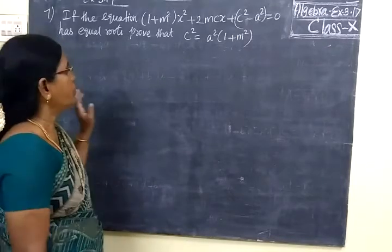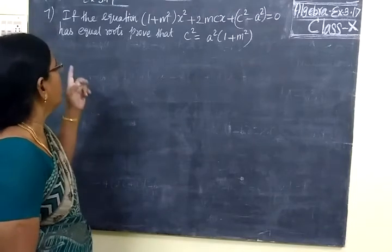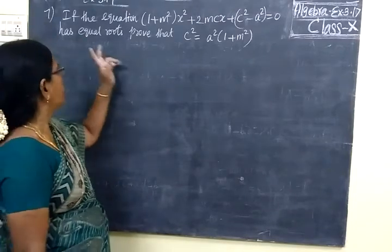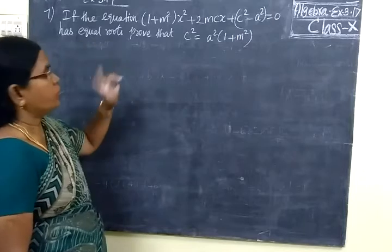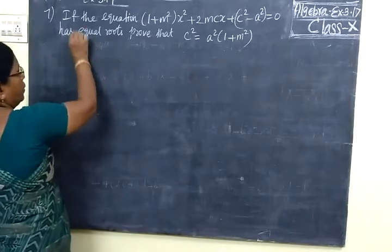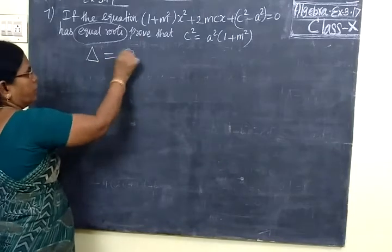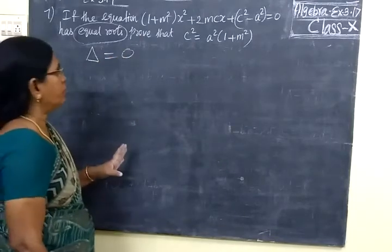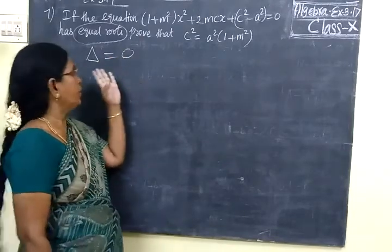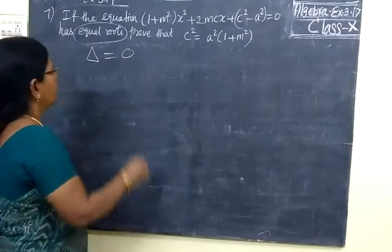Thank you all. Now we are going to see the 7th one. If the equation has equal roots, equal roots or real and equal roots, we say delta equal to 0.